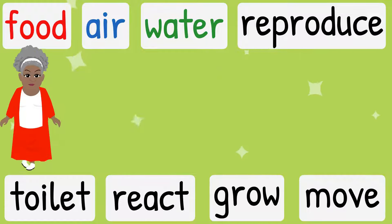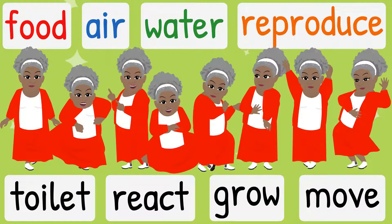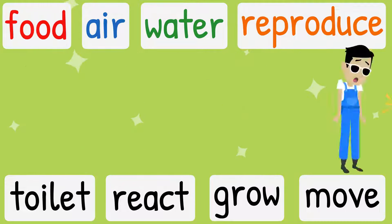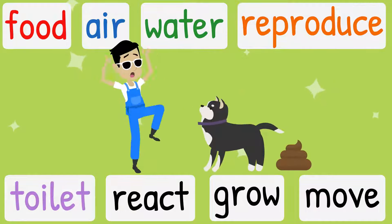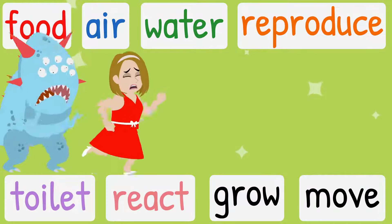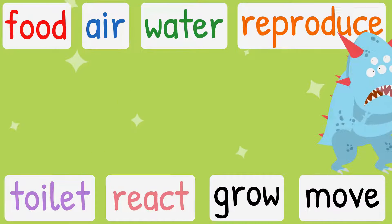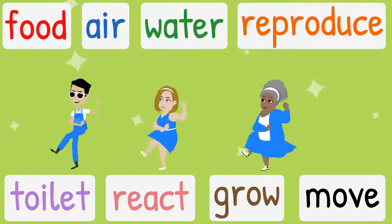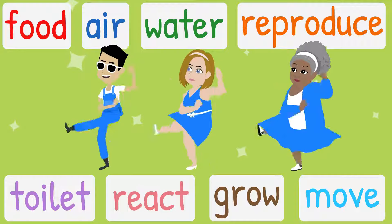Living things need food, air and water. Living things can reproduce and go to toilet. Living things react to their surroundings, living things can grow and move.